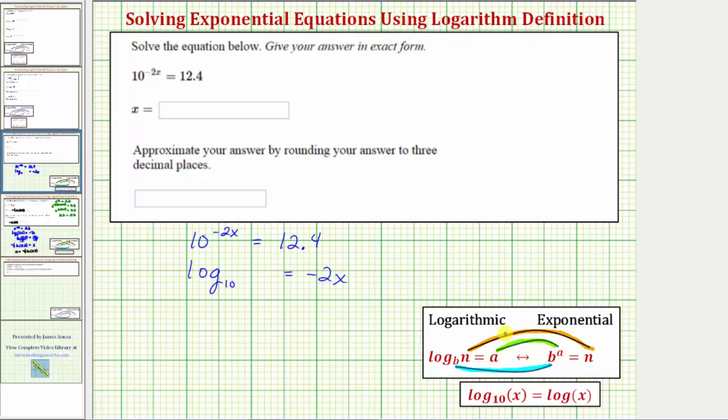And then finally, because the exponential part is equal to the number 12.4, our log equation is log base 10 of 12.4 equals negative 2x.